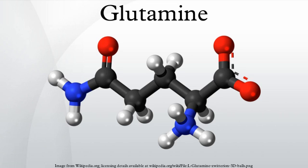The most eager consumers of glutamine are the cells of the intestines, the kidney cells for acid-base balance, activated immune cells, and many cancer cells. With respect to the last point, different glutamine analogues, such as DON or azaserine, are being tested as anti-cancer drugs.